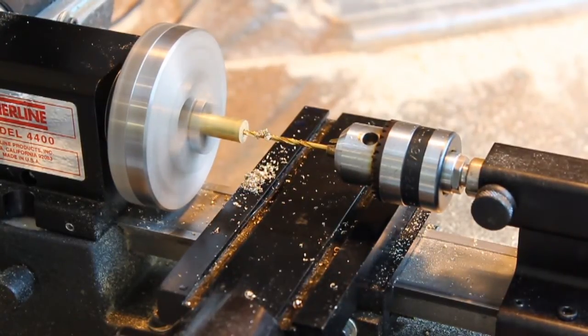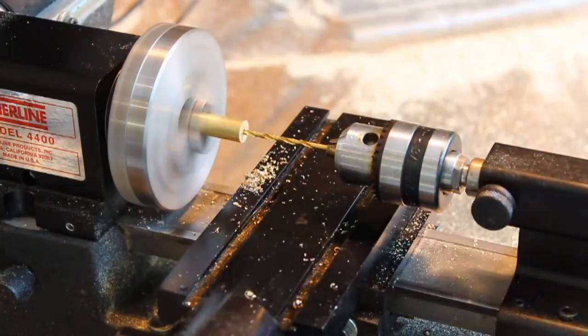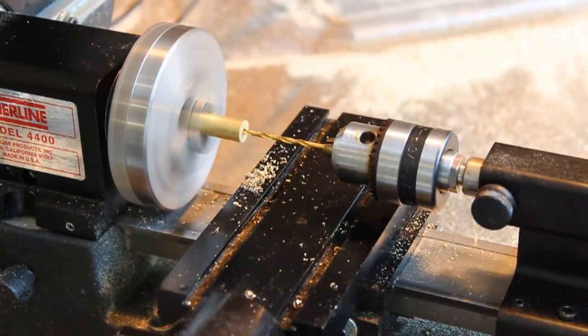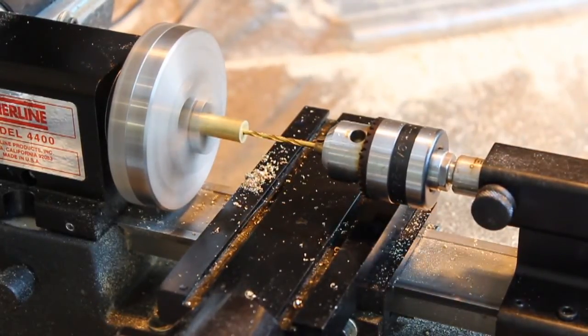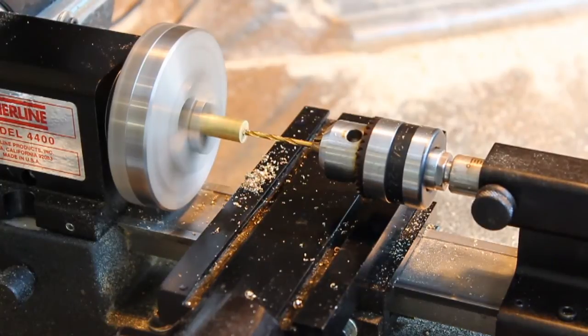This hole is to let the little support I'm making sit on the center shaft of the orrery.